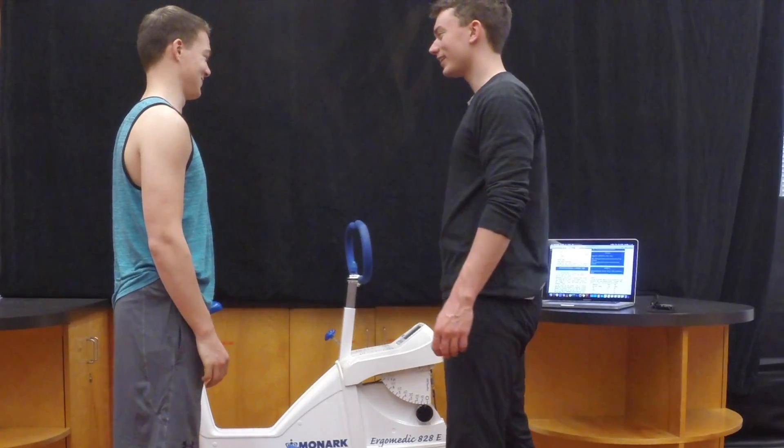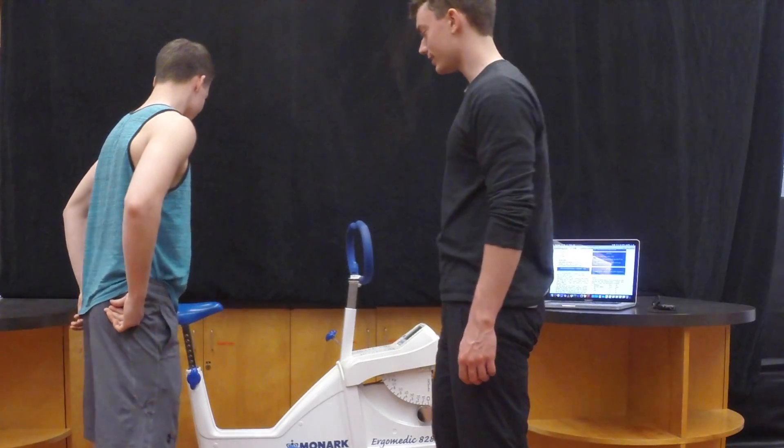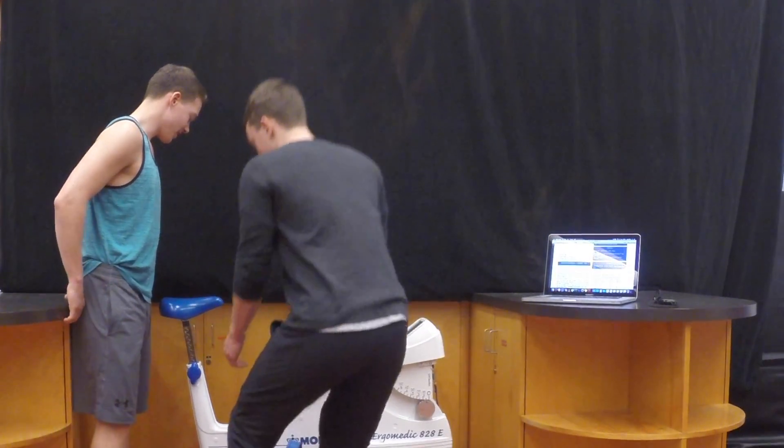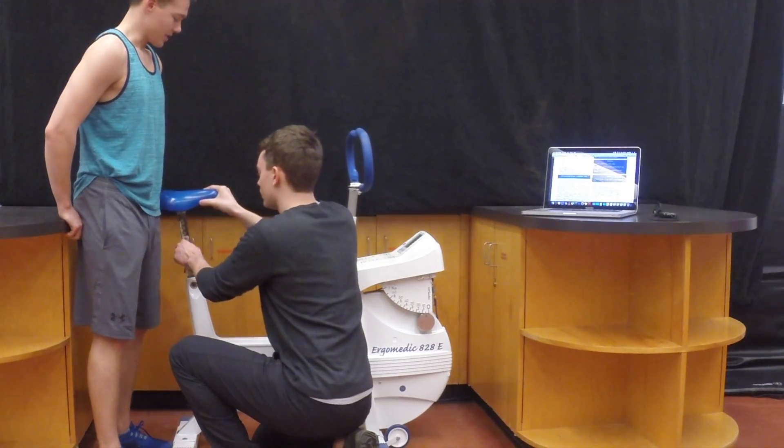To do the YMCA cycle ergometer test, first adjust the seat post to the client's height. Placing it at hip height is usually a good start, but further adjustment might be necessary.